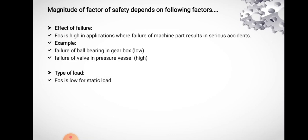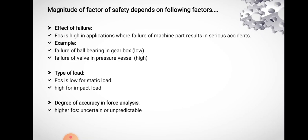The second factor is type of load. The factor of safety is low when the external force acting on the machine element is static - a load that does not vary in magnitude or direction with respect to time. A high factor of safety is selected when the machine element is subjected to impact load, because impact loads are suddenly applied at high velocities. The third factor is degree of accuracy in force analysis. When forces are precisely determined, a low factor of safety can be selected. When forces are uncertain or unpredictable in magnitude or direction, a higher factor of safety is necessary.